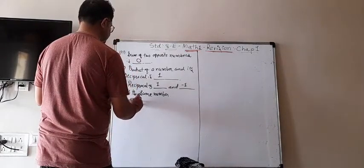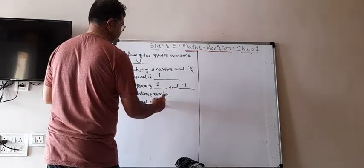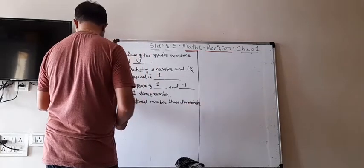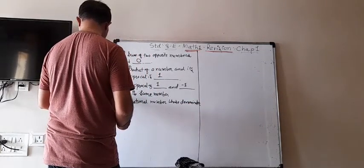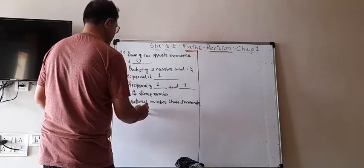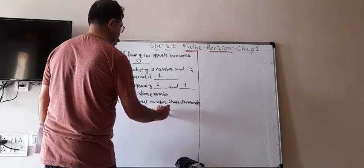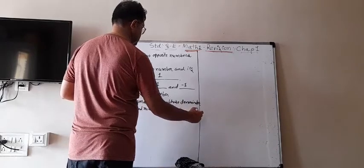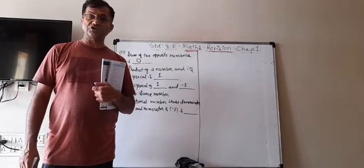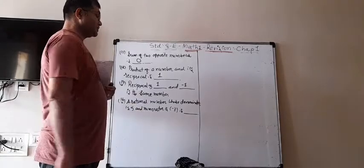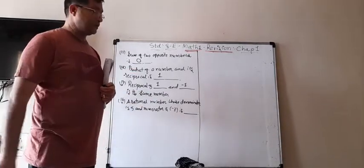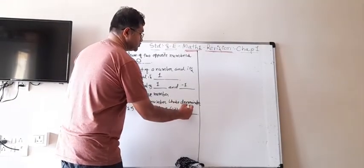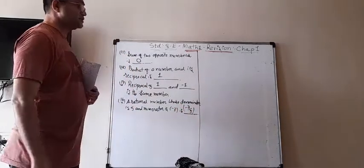Number 14. A rational number whose denominator is 5 and numerator is minus 3 is blank. Sometimes there is a chance of making a mistake. Generally, what do we write? First number in the numerator, second in the denominator. So you might write 5 upon minus 3 — but 5 is in the denominator and minus 3 is in the numerator. So the answer is minus 3 upon 5, not minus 5 upon 3. The main thing to remember: denominator should be at the bottom, numerator on the top.